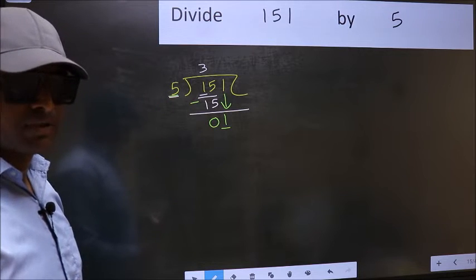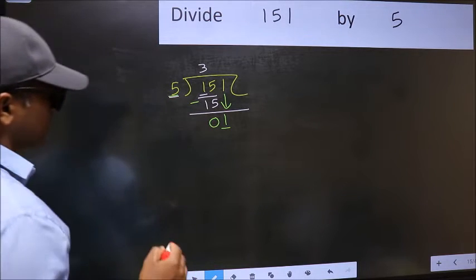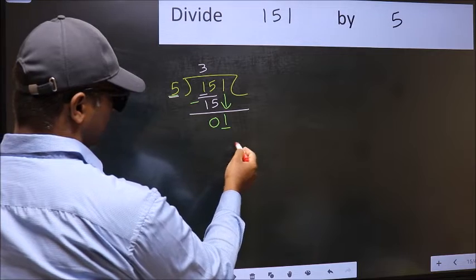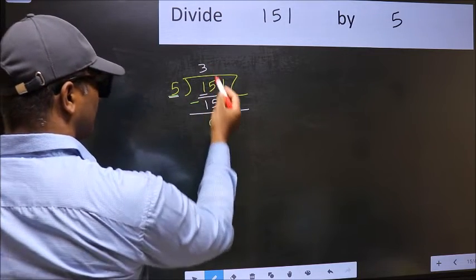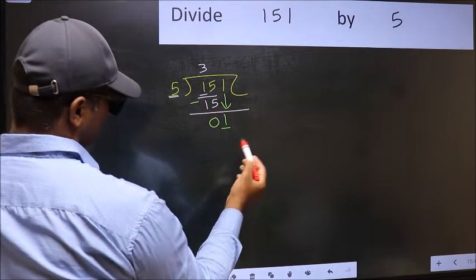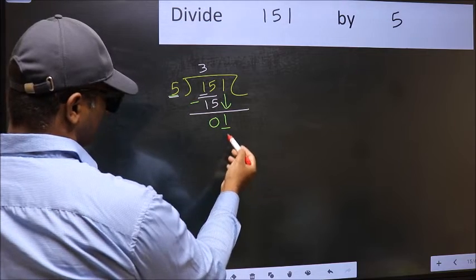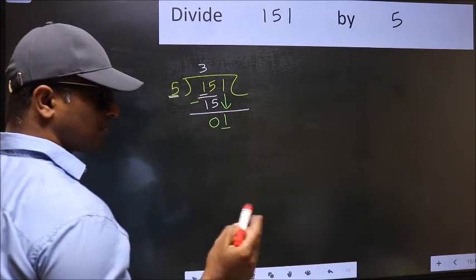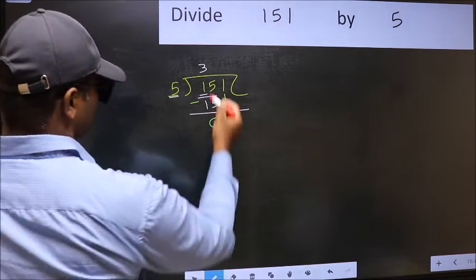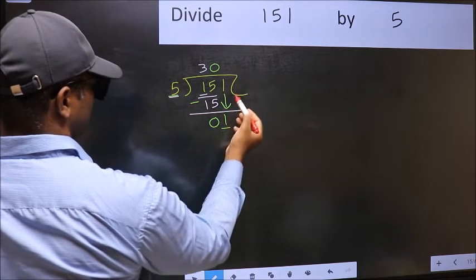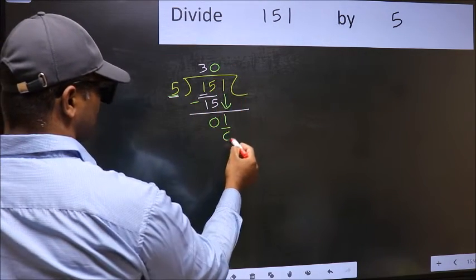what you should think of doing is, what number should we write here. If I take 1 here, I will get 5. But 5 is larger than 1. So what we should do is, we should take 0. So 5 into 0, 0.